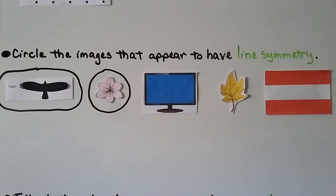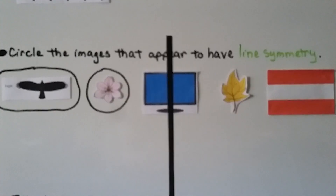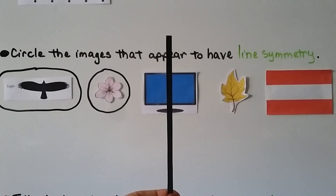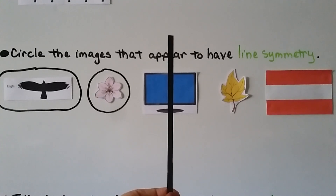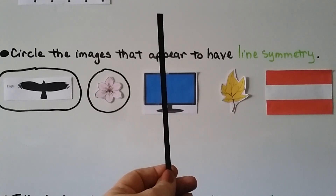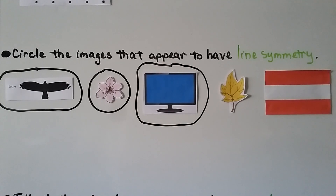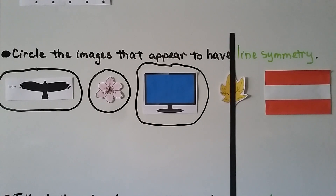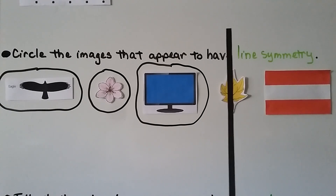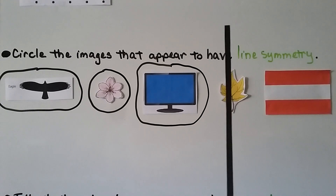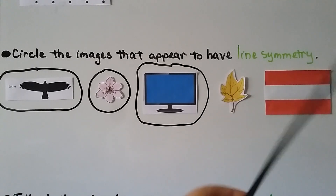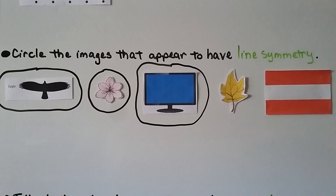A television set: if we draw a vertical line, both sides including the stand would fold perfectly — it has line symmetry. A leaf: if we draw a vertical line, one part of the leaf sticks out too much, so it does not appear to have line symmetry.